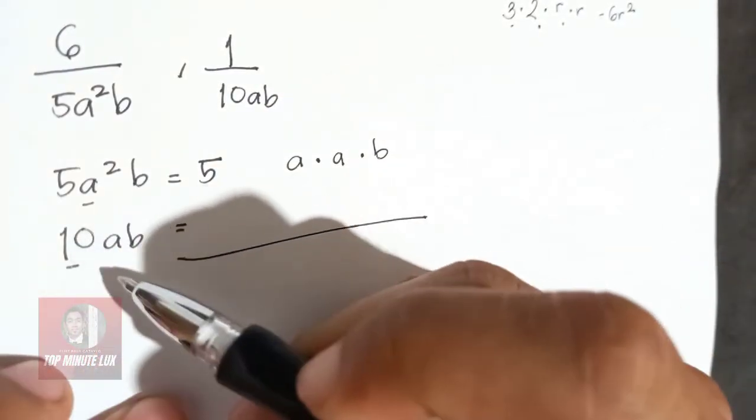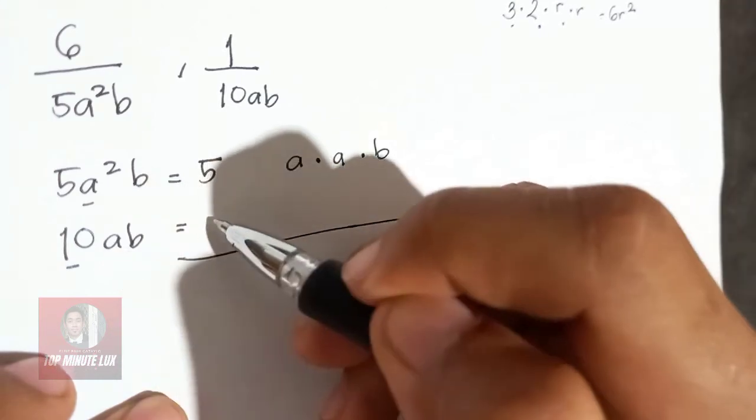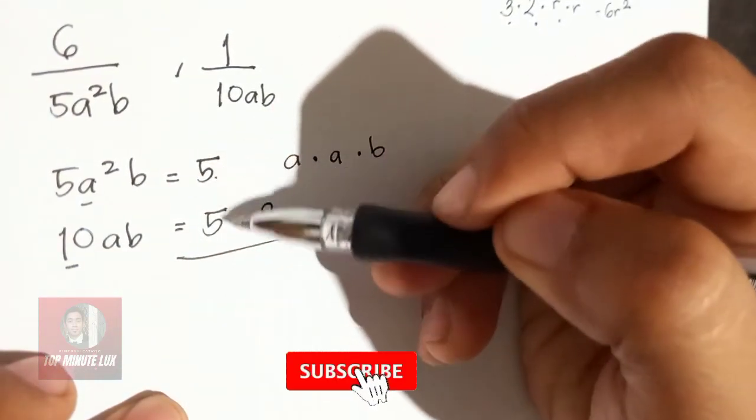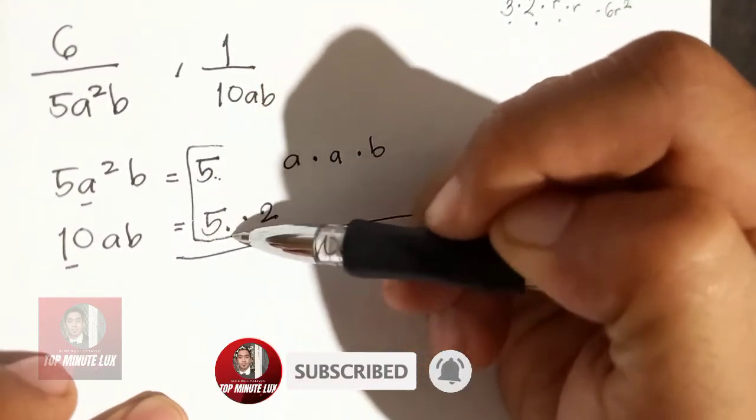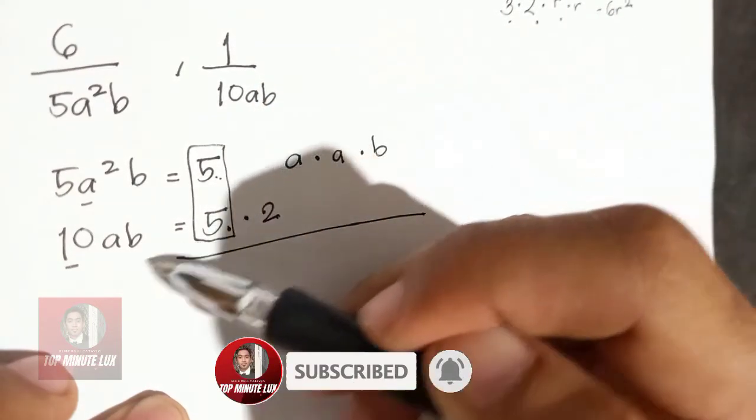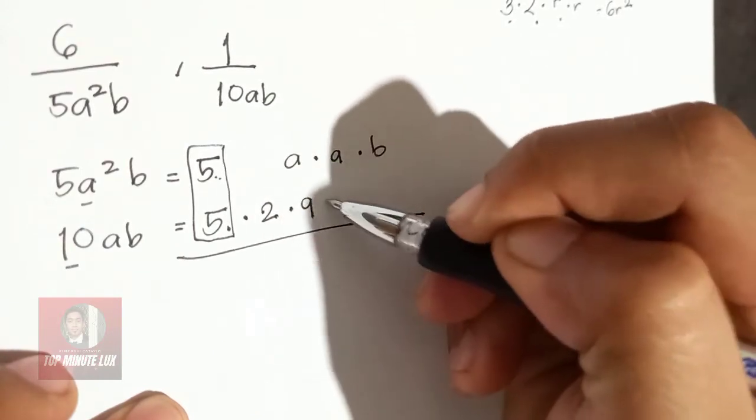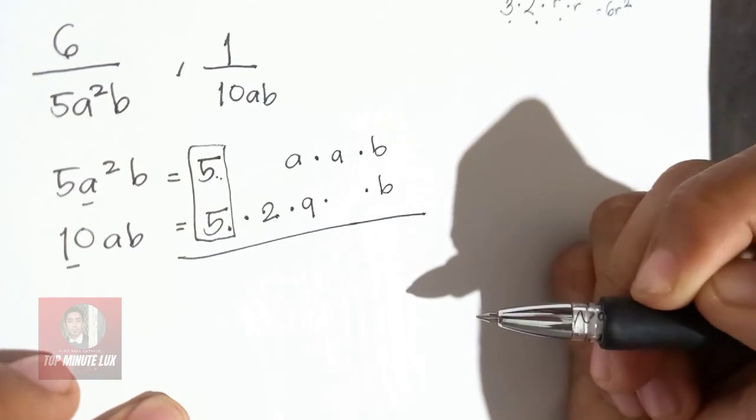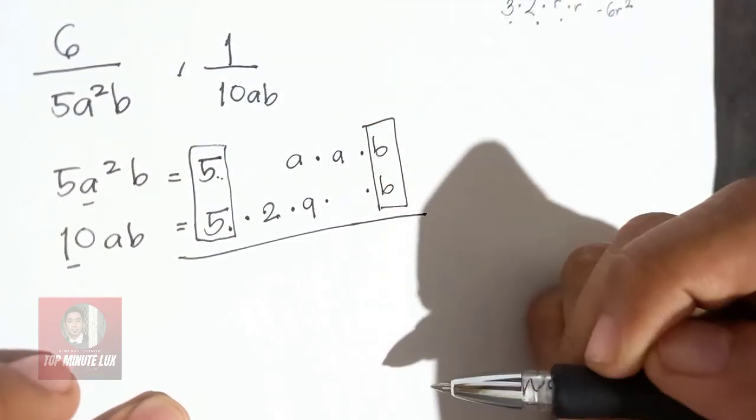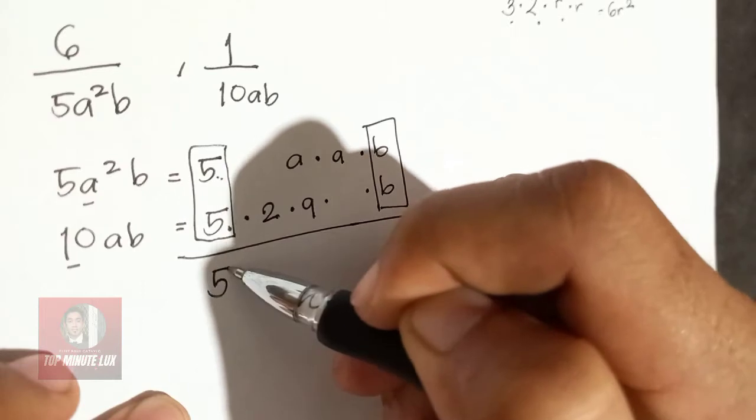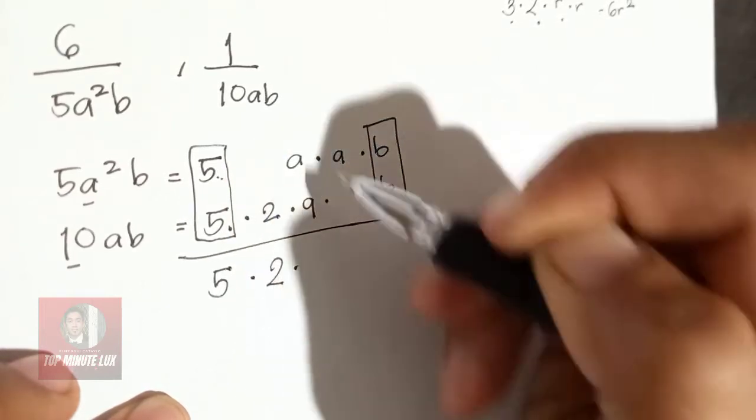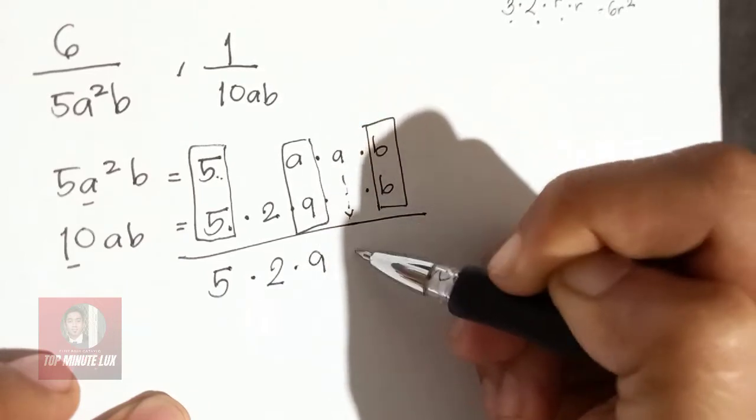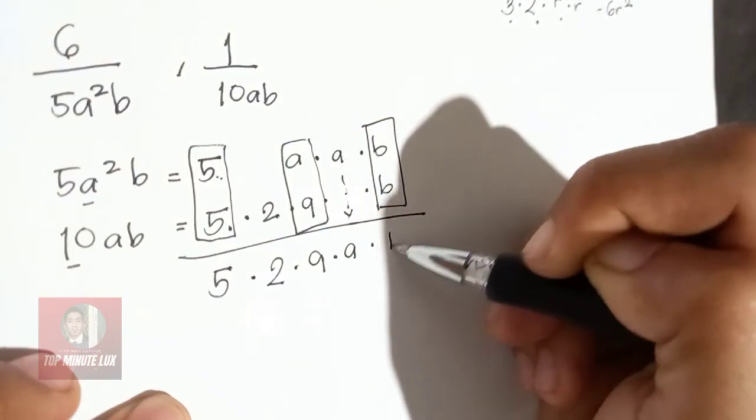Next, for 10, the multiples of 10 are 5 times 2. So as you can observe, I have aligned 5 with 5 because they are common. Next, A. You have 1A, then space. You have only 1A, then align it with B because they are common. So bring down. The common is 5, bring down 2. Bring down the common A, bring down also the A, and bring down the common B.